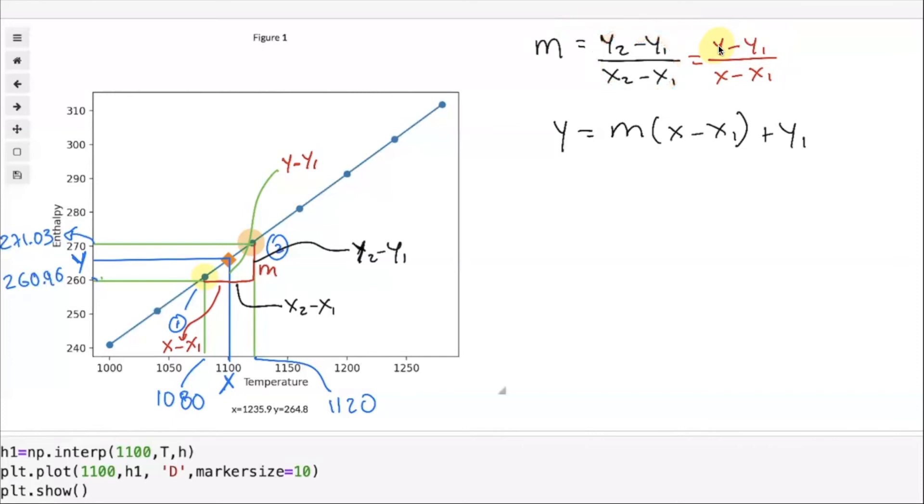Now we are ready to evaluate our function. First we compute the slope. The slope m is equal to (y2 minus y1) so that's 271.03 minus 260.97 divided by (x2 minus x1), so 1120 minus 1080, and that will give us a value of 0.2515.